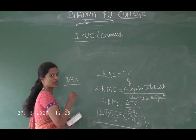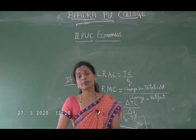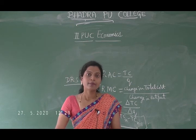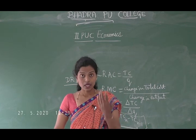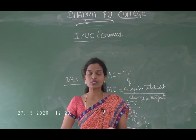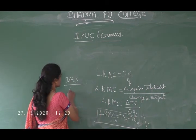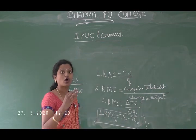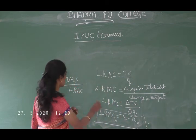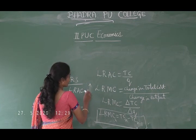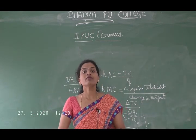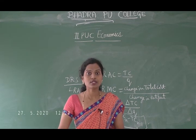Under decreasing returns to scale (DRS), all input factors are increased simultaneously in the same proportion, but the increase in output is less than that proportion. During decreasing returns to scale, long-run average cost was increasing.